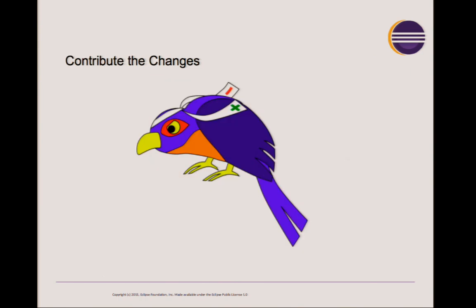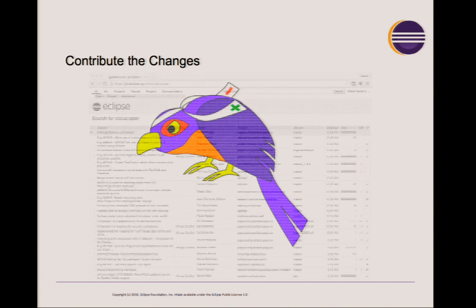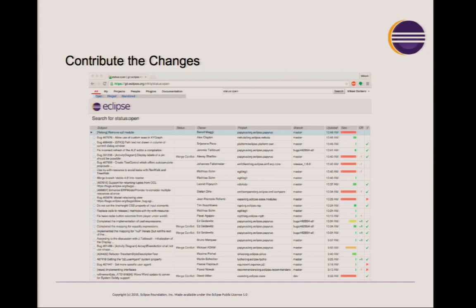Another goal of CBI is to make it easier to contribute changes. After the migration to Git, the obvious solution was to install a Gerrit server. We now provide a master Gerrit instance for all projects, so whenever you want to contribute a change, you push a change to the proper branch on Gerrit, and the committers get a notification that a new change has been submitted and should be reviewed.